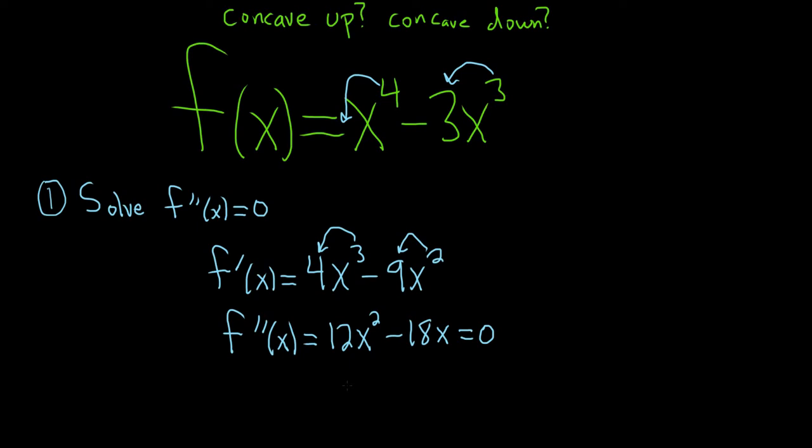Looks like we can pull out a 6x. So let me rewrite it. F double prime of x equals 6x, because 6 goes into 12 two times, so that will give us 2x. And it goes into 18 three times, so minus 3. And this is equal to 0.